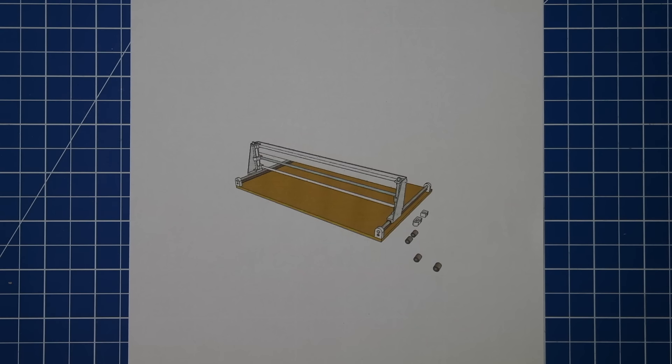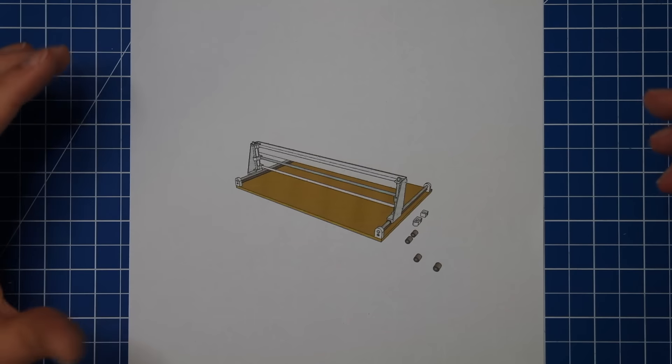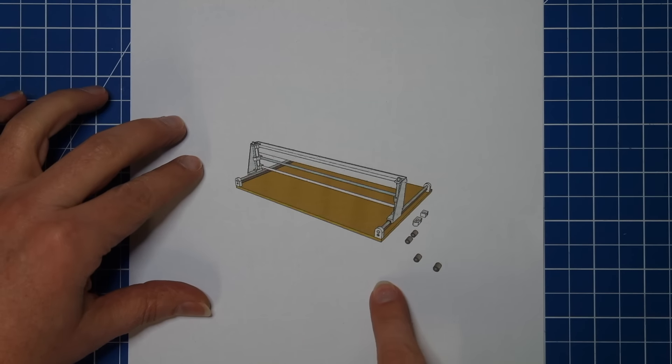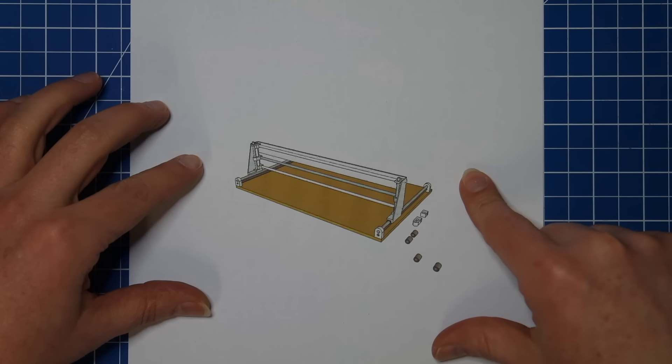The first CNC machines that I built were rather small with about a travel of 15 centimeters and I thought let's go for something bigger. So I'm going to try and build a full-size table of about 150 by 90 centimeters